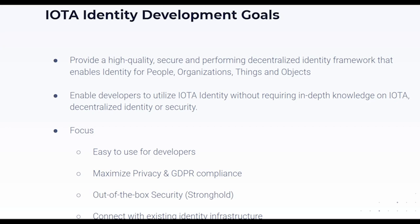The first goal: provide a high quality, secure, and performing decentralized identity framework that enables identity for people, organizations, things, and objects. High quality, secure, and performing is not standard with DID implementations. Of the 85 registered on W3C, quite a few are quick-and-dirty implementations or already abandoned. Some are high quality and well maintained — we want to be in that list. IOTA identity will not be delivered at version 1.0 and then abandoned; it will continuously improve with a focus on really high quality code.